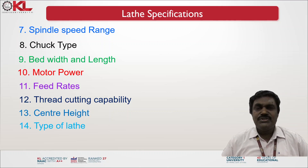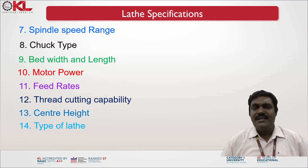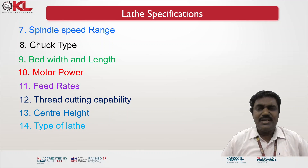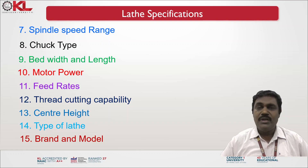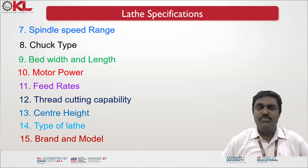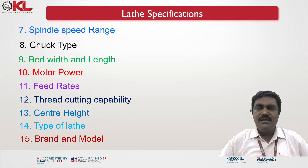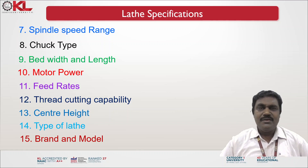Then type of lathe — which type of lathe you require, whether it is a center lathe, engine lathe, capstan lathe, or other types. Then brand and model — you can specify the brand you want, such as HMT or Kirloskar, and which model you require. These 15 specifications are needed to clearly define the optimal size of lathe machine for your requirement.